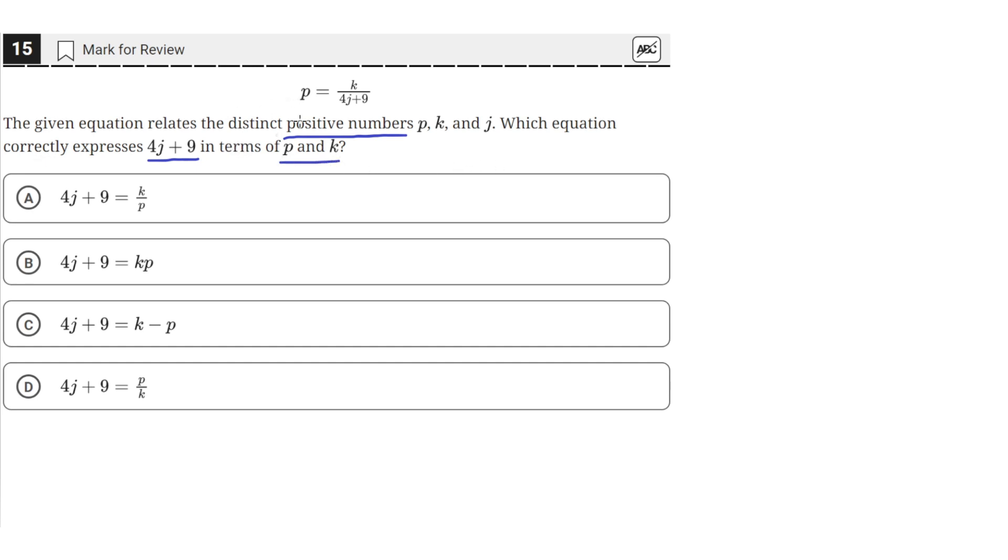So this question is just asking us to isolate for the quantity 4j plus 9 and set it equal to some expression in terms of p and k, so an expression that uses the terms p and k. Here we have p equals k over 4j plus 9.